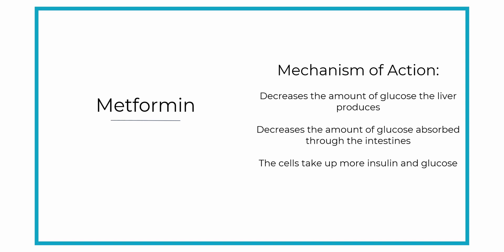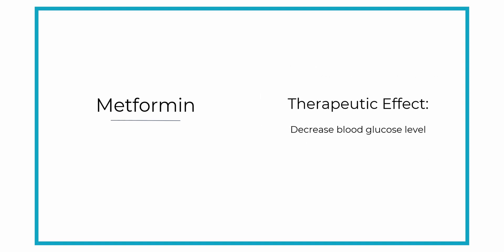So by decreasing the amount of glucose the liver makes, decreasing the amount that the intestines absorb, and causing the cells to take up more glucose, the blood glucose level is reduced. The therapeutic effect of all of this is that it decreases the blood sugar level.